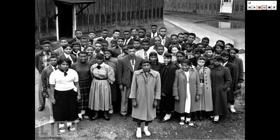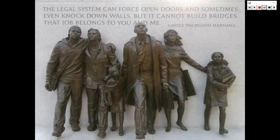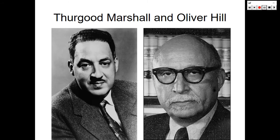Here we have Dorothy Davis and the students at R.R. Mouton High School. This is a famous image of the monument located at the Virginia State Capitol, referencing 'It Seemed Like Reaching for the Moon' — Barbara Johns and her quote about the students on strike from R.R. Mouton High School. On the other side of the monument is the quote: 'The legal system can force open doors and sometimes even knock down walls, but it cannot build bridges. That job belongs to you and me.' Here we have Thurgood Marshall on the left and Oliver Hill on the right.